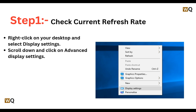We will move on by following Step 1: check the current refresh rate. Right-click on the desktop and select Display Settings, then scroll down and select Advanced Display Settings.